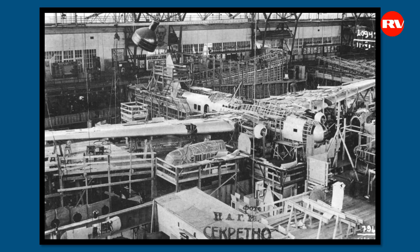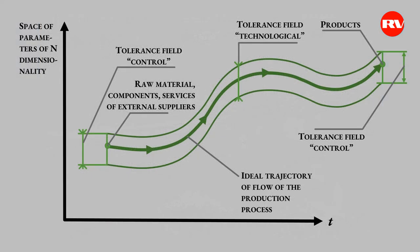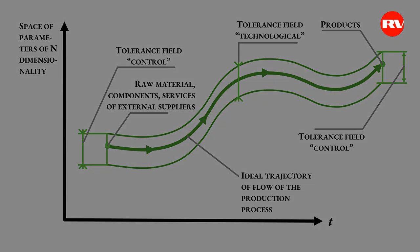And this link between construction and technology conditions the quality of products. Therefore, designing a construction without knowing the technologies on the basis of which it will be produced is a stupid task. But any progress in the field of design requires corresponding progress in the field of technological support. Once again, it is necessary to build a technological process and follow technological discipline. Then, on condition that the set of requirements was formulated correctly and correctly implemented in the construction, the quality of the product will also be ensured. That's all for today.